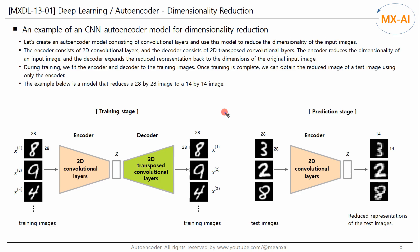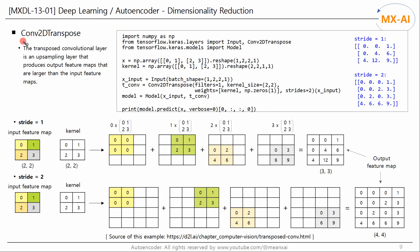Next, let's create an autoencoder model consisting of convolutional layers and use this model to reduce the dimensionality of the input images. The encoder consists of 2D convolutional layers and the decoder consists of 2D transposed convolutional layers. The encoder reduces the dimensionality of an input image and the decoder expands the reduced representation back to the dimensions of the original input image. The example below is a model that reduces a 28 by 28 image to a 14 by 14 image. During training, we fit the encoder and decoder to the training images. Once training is complete, we can obtain the reduced image of a test image using only the encoder.